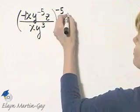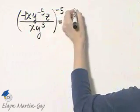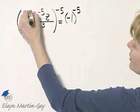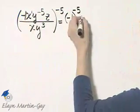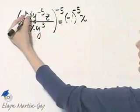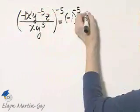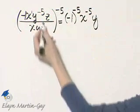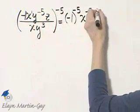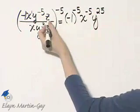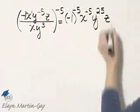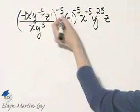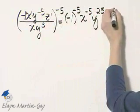So I'll have negative 1 raised to the power of negative 5. Now, remember this x has an understood power of 1, so this will be x raised to the power of 1 times negative 5, or negative 5. This y is raised to the power of negative 5 times negative 5, or positive 25. And this z is raised to the power of — remember, understood 1 — 1 times negative 5, which is negative 5.